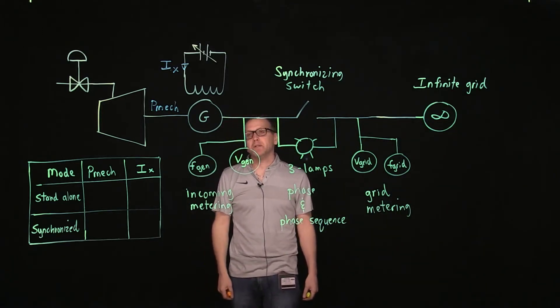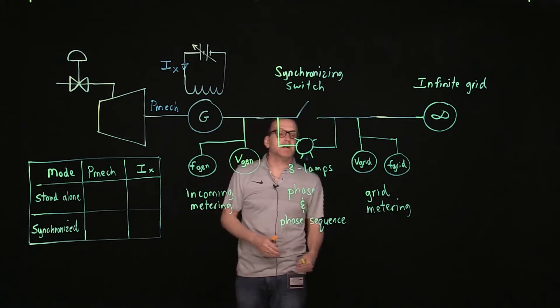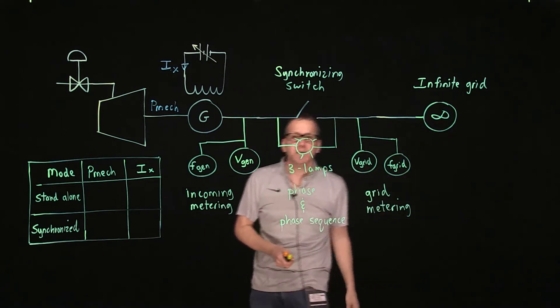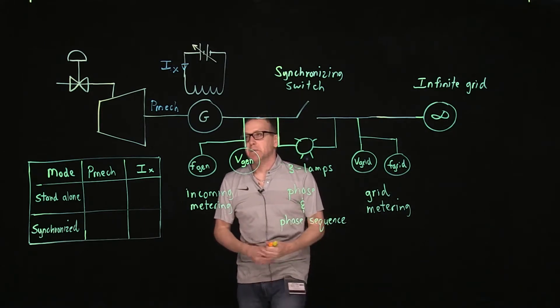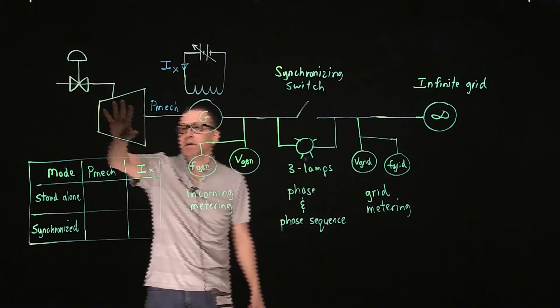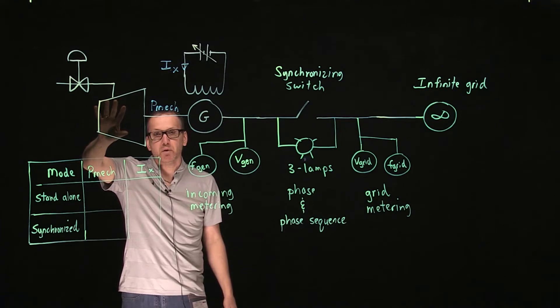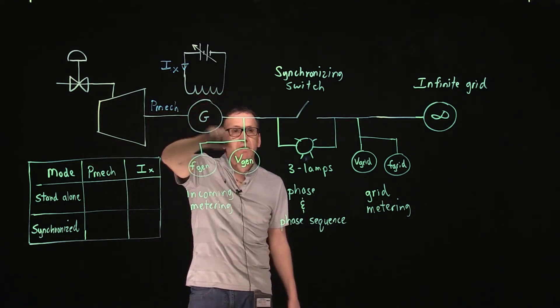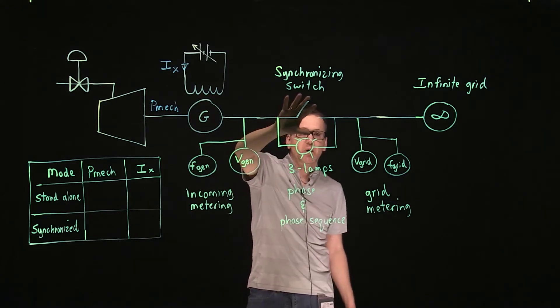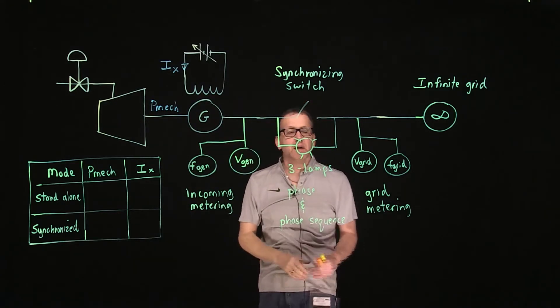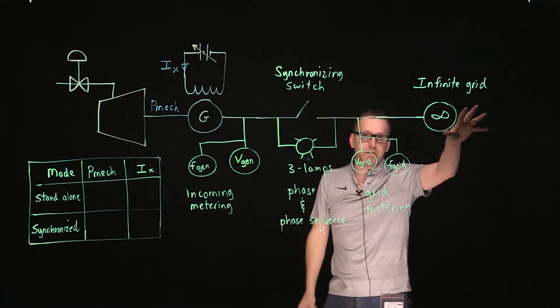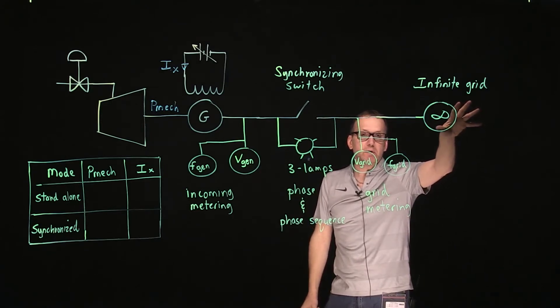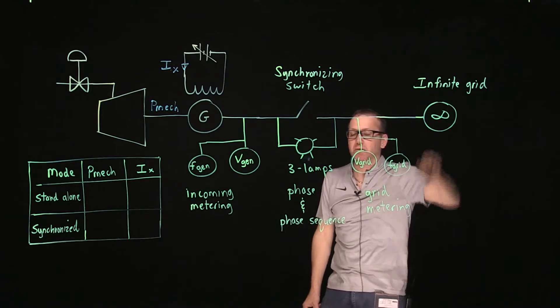Here's a single line diagram representing our synchronous generator set up to synchronize to the infinite bus or infinite grid. In the lab, our turbine is going to be our LabVolt prime mover. This represents our synchronous generator. This represents the synchronizing module or synchronizing switch that we have in the lab. And the infinite bus or infinite grid is going to be our bench source power supply, which represents us synchronizing to NMAX.